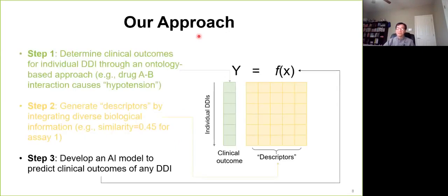To overcome these difficulties, we propose our approach. If you see this illustration, our approach consists of three steps. First step is to determine the clinical outcome of individual drug-drug interactions through a proposed ontology-based strategy. The second one, we generate descriptors by integrating diverse biological knowledge to describe the drug-drug interactions. With the clinical outcome and descriptors for individual drug-drug interactions, this allowed us to build AI-powered models to predict the clinical outcome for any drug-drug interaction.